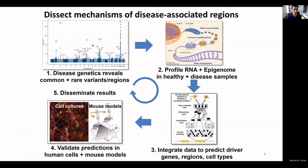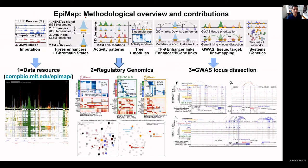We start with disease genetics across both common and rare variants, then systematically profile RNA and the epigenome in healthy and disease samples. We integrate the data to predict driver genes, regions, and cell types, and validate our predictions in human cells and mouse models. For EpiMap, Carlos systematically sought to integrate ENCODE, Roadmap Epigenomics, and GGR to build a resource enabling large-scale regulatory genomics studies.